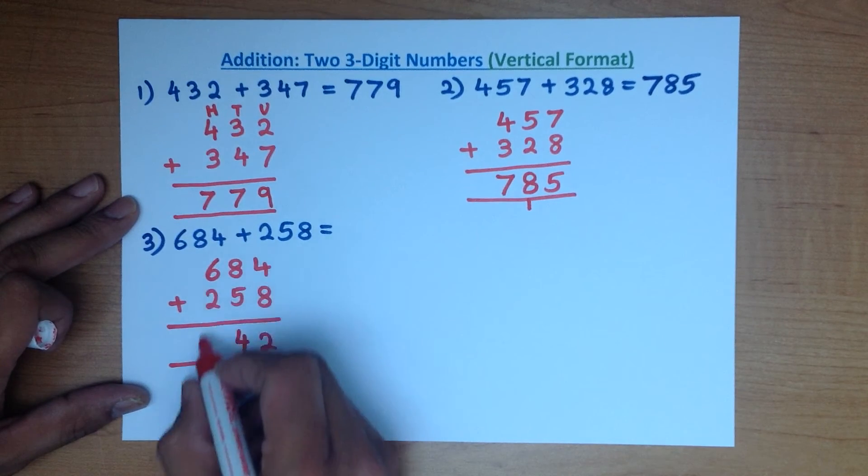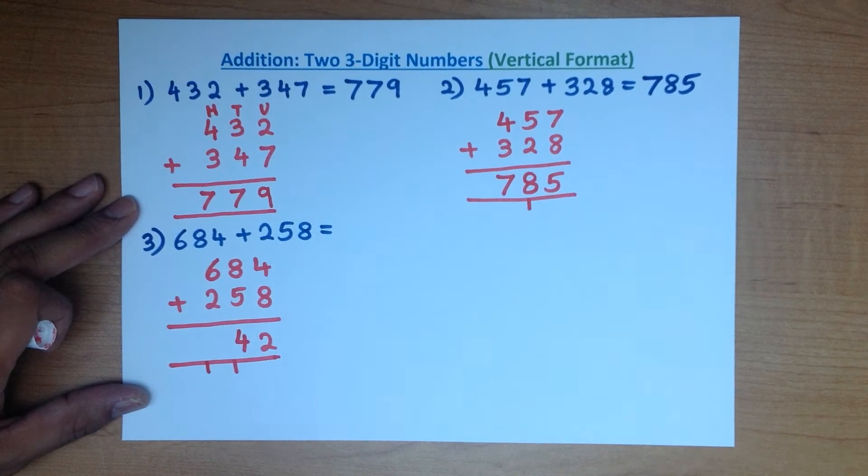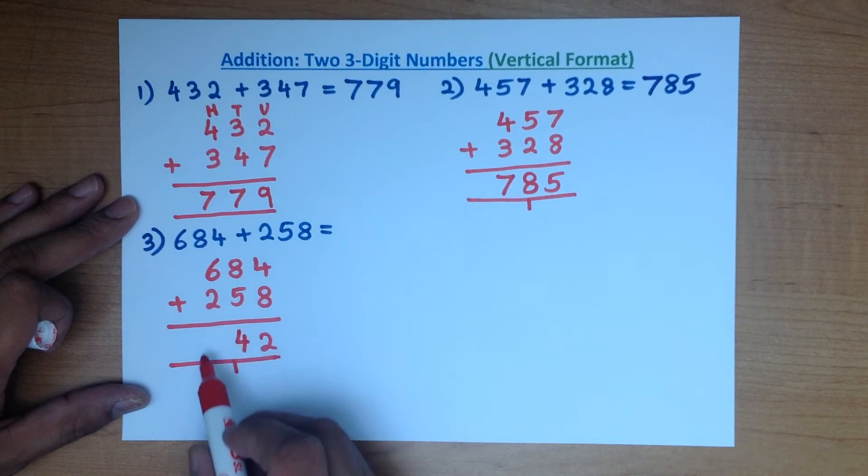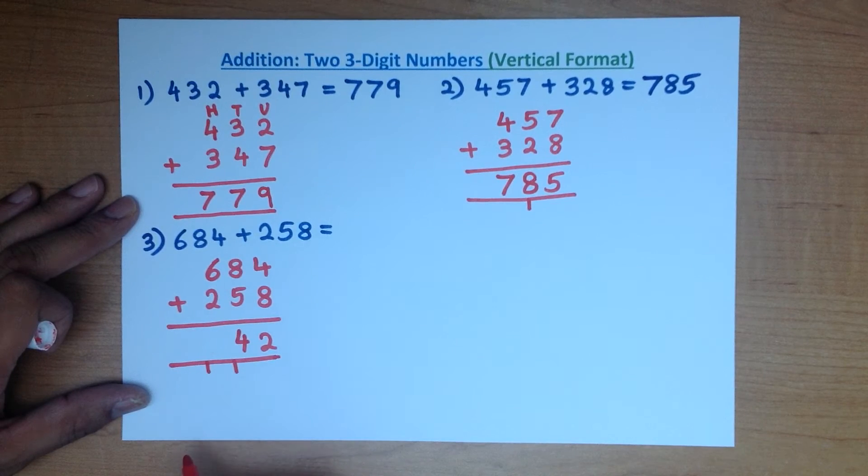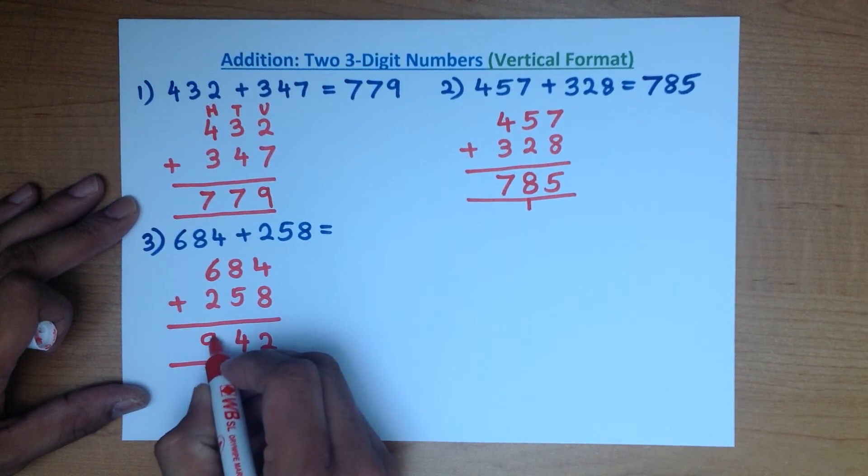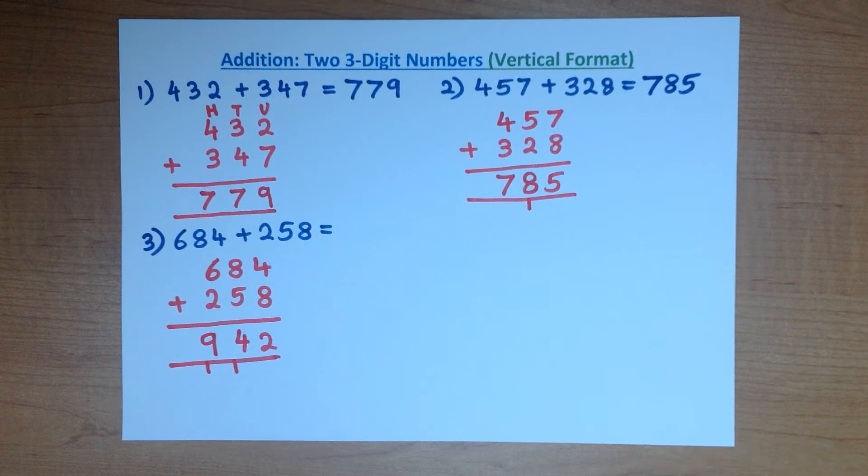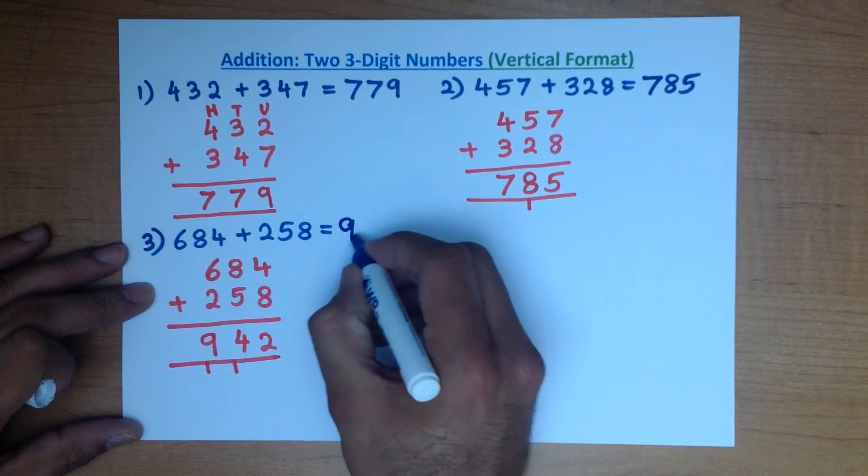This 1 is now part of the hundreds column. We now add the hundreds. 6 plus 2 plus 1. Do you know what the answer is? That's right, it is 9. And we have our answer. 684 plus 258 is 942.